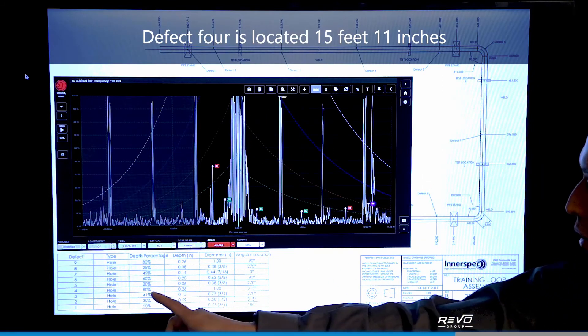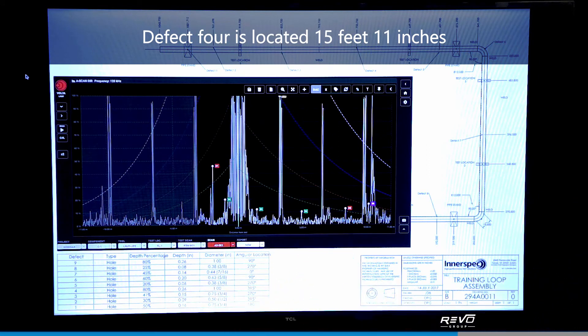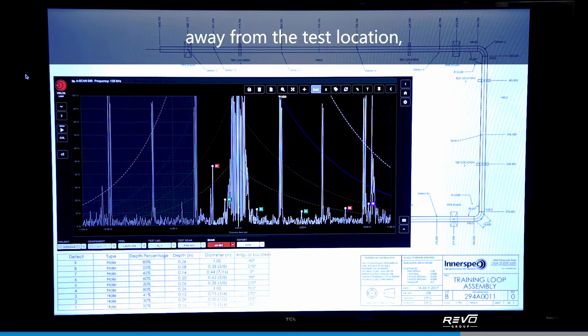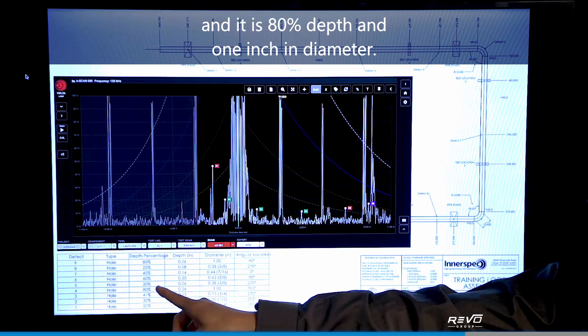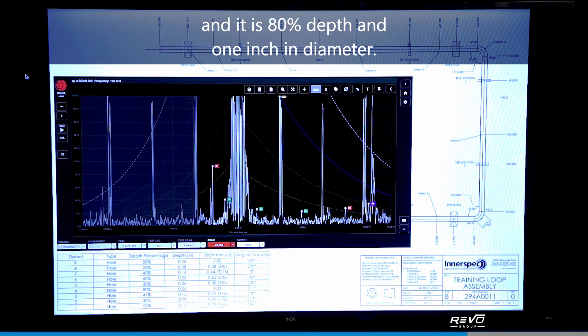Defect 4 is located 15 feet 11 inches away from the test location and it is 80% depth and 1 inch in diameter.